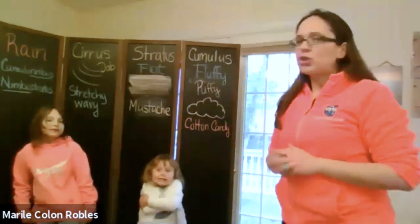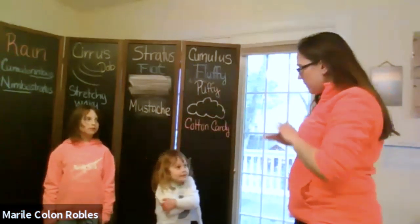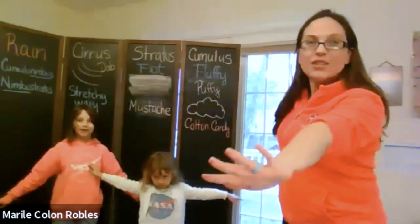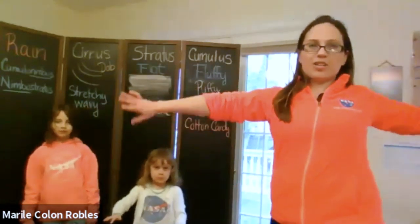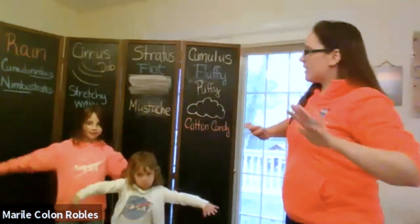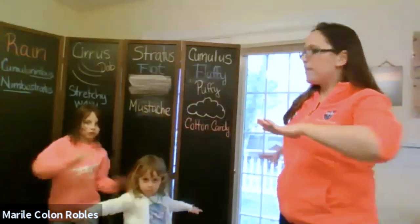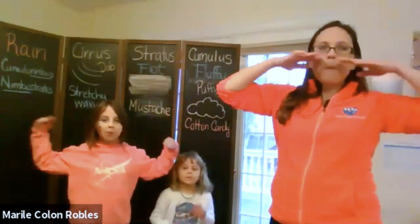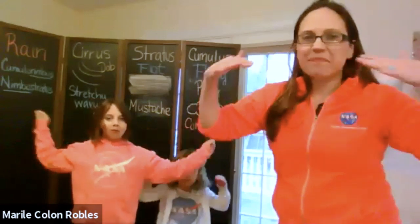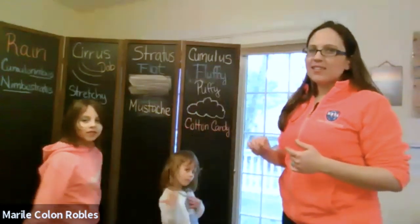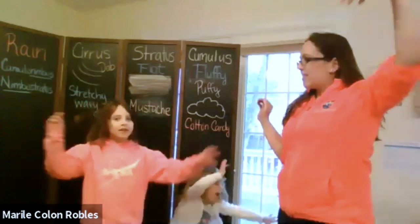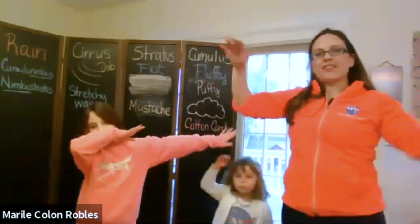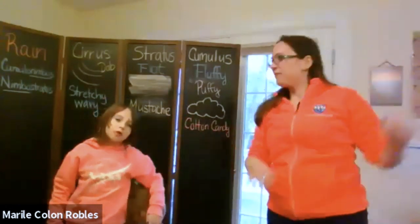Okay, now let's do stratus. Shelby, stratus — it's flat and it goes everywhere, so make sure to stretch in every direction. Now Madison, do you want to do your mustache? Oh, I like that! Okay, now let's do cirrus — wispy and nice and fluffy. And you can also do the dab. Let's do the dab — it kind of looks like the dab. Very good!